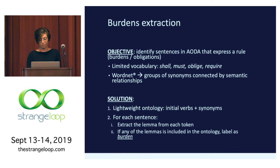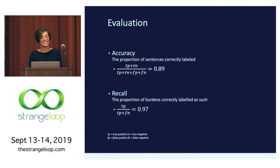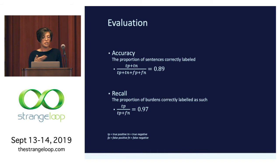This is a pretty coarse classification rule, so we wanted to know how well we were doing. We actually sat down and manually labeled the sentences in the text — which wasn't very fun, but the legislation isn't very long, so it allowed us to compute some performance metrics. Accuracy — the proportion of sentences correctly labeled overall — came out at 89%. And recall — of all the burdens in the text, how many were correctly labeled as burdens — was 97%, which for a simple business rule is pretty good.